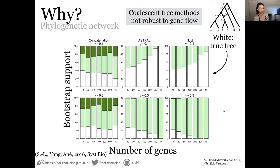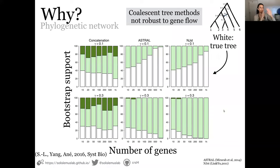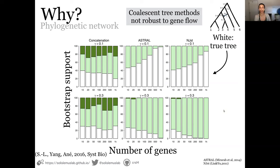When gamma is 0.1, both ASTRAL and NJST perform well. The white bars show the proportion of times we reconstruct the correct tree; as we increase the number of genes on the x-axis, that proportion approaches 100%. However, when gamma is 0.3, that does not happen anymore — the proportion of times we reconstruct the correct tree goes down to zero. With NJST and a thousand genes, you never reconstruct the true tree.